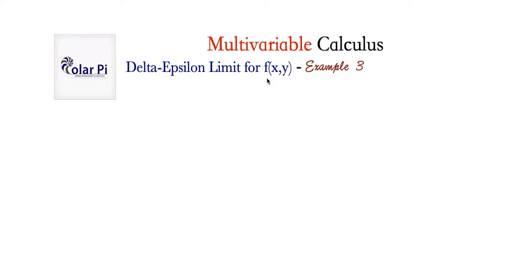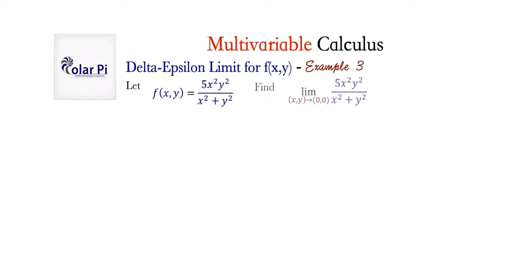This video has us write our second delta-epsilon limit proof, because this is what we're considering. The function is this, and this is the limit that we're considering — that is, the limit as x comma y goes to (0, 0) of f(x, y).